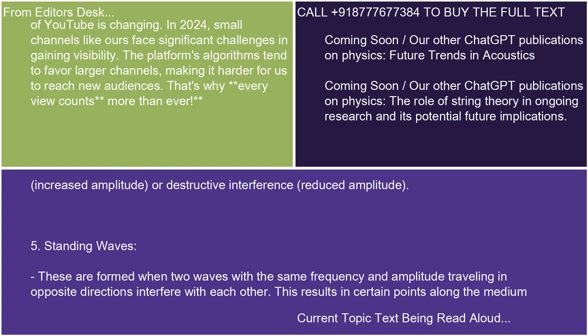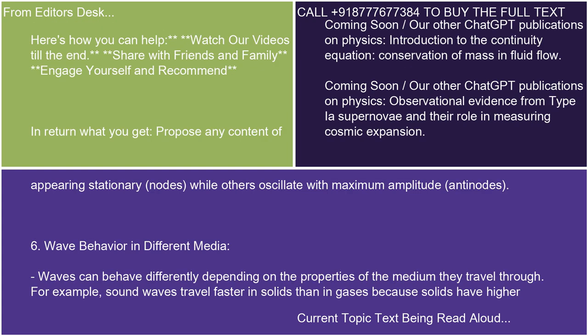5. Standing waves: these are formed when two waves with the same frequency and amplitude traveling in opposite directions interfere with each other. This results in certain points along the medium appearing stationary, called nodes, while others oscillate with maximum amplitude, called antinodes.